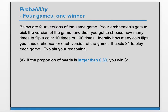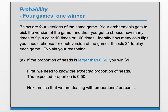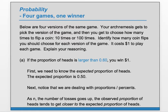Part A: if the proportion of heads is larger than .6, you win $1. The question is, do you prefer fewer tosses or more tosses to increase the likelihood of this happening? First, we need to know the expected proportion of heads. The expected proportion of heads is .5 or 50%. Next, notice that we are dealing with proportions or percents — we are interested in the proportion of heads being larger than .6, not in an absolute number of heads.